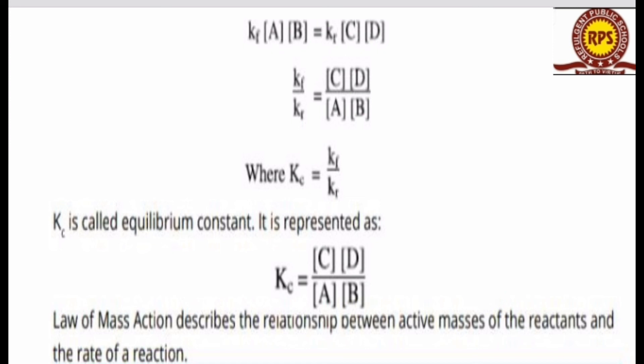The law of mass action describes the relationship between the active masses of the reactants and the rate of reaction. This law of mass action is used to show the relationship for the active masses A, B, C and D — the mole per decimeter cubed — and the reactants involved in the forward reaction and reverse reaction.